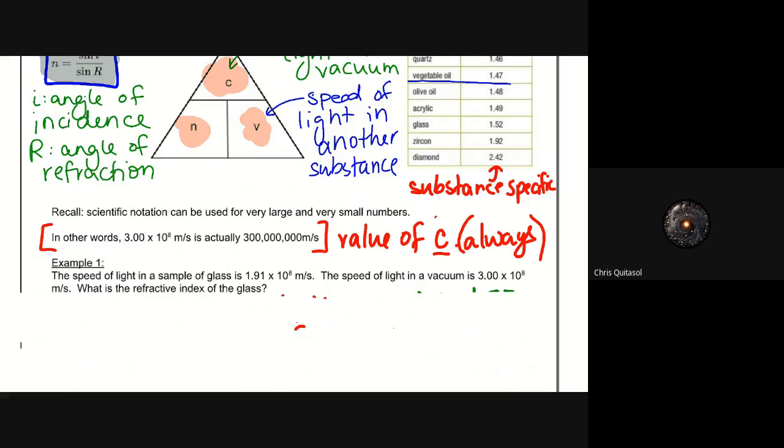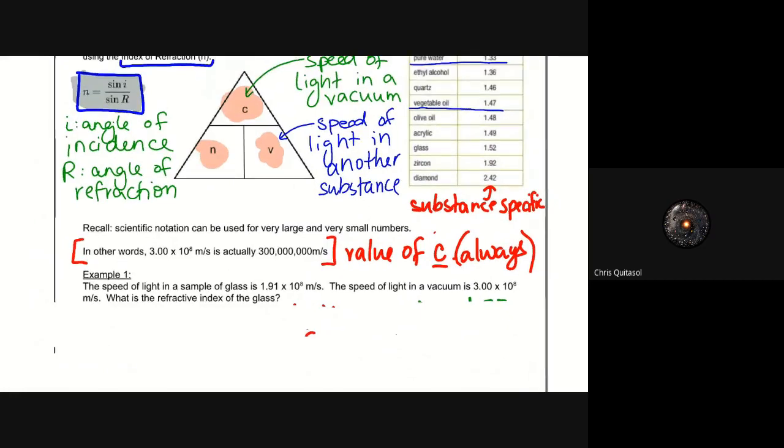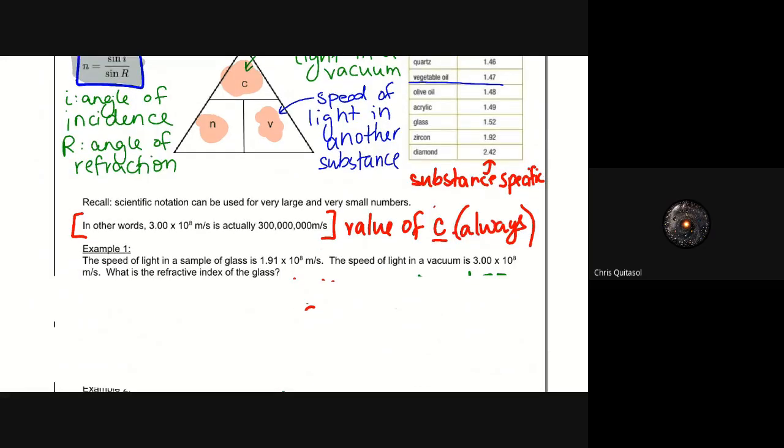But regardless, let's take a look at this first example. And let's see if we can utilize and understand how these equations and how this specific... Because there's two equations here, right? The one that I highlighted in orange and the one that I highlighted in black. And we are able to solve n with the angle of incidence and the angle of refraction. Or we can solve n using the speed of light in another substance as well as the speed of light in a vacuum.